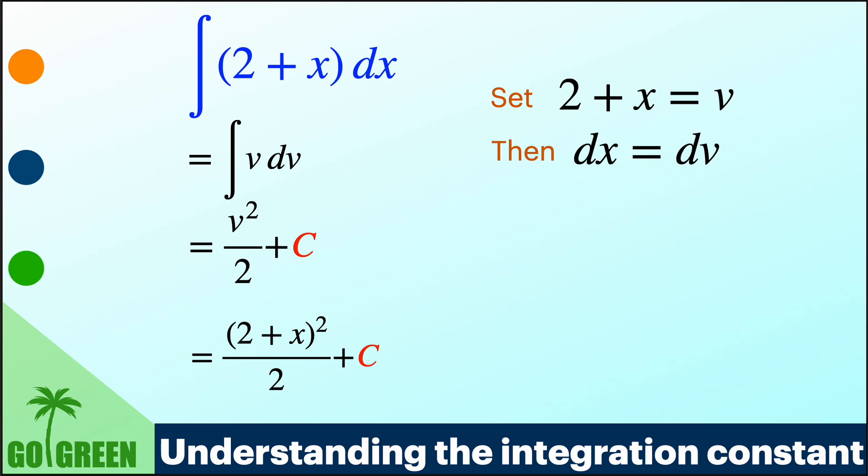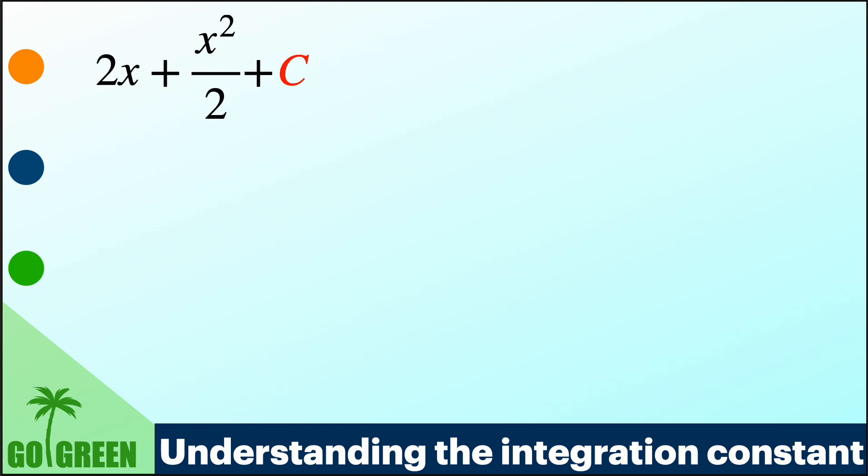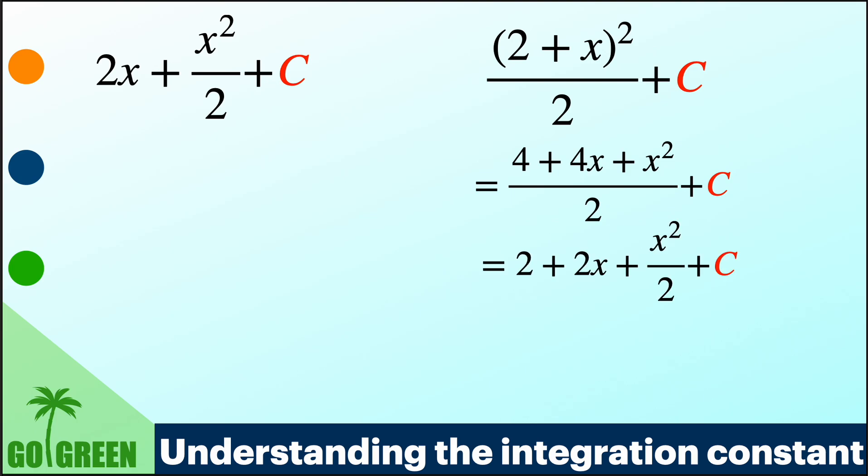Now are they different? Let's see. If I open this bracket up, I will get 4 plus 4x plus x squared by 2, and dividing by 2 gives 2 plus 2x plus x squared by 2. So without the integration constant C, you see that the two functions 2x plus x squared by 2 and 2 plus 2x plus x squared by 2 are different, but up to plus 2 only. So why is this difference there, and which one will be the correct answer to this question?